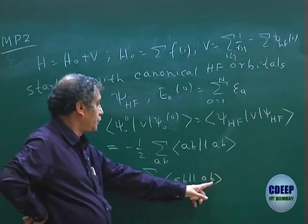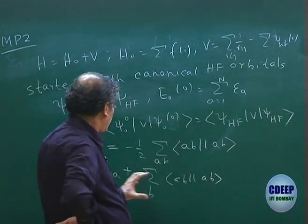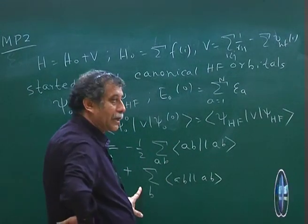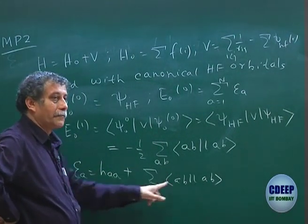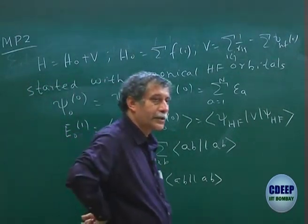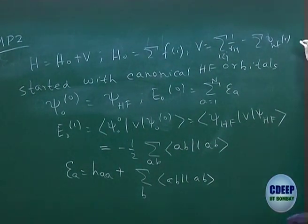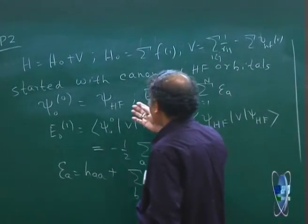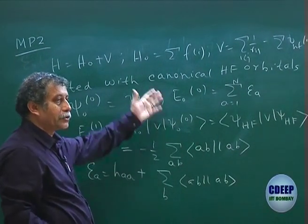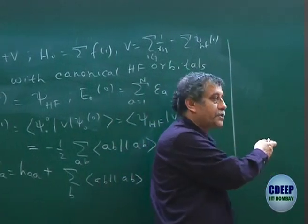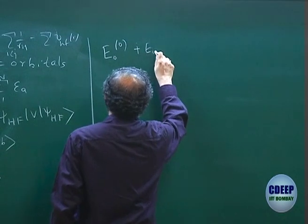So if you add that to the orbital energy — where the orbital energy ε_A was H_AA plus the sum over B of ⟨AB||AB⟩ — when you sum orbital energies and add the first-order perturbation correction, you get half of ⟨AB||AB⟩, which gives you the Hartree-Fock energy. So E naught 0 plus E naught 1 equals the Hartree-Fock energy.